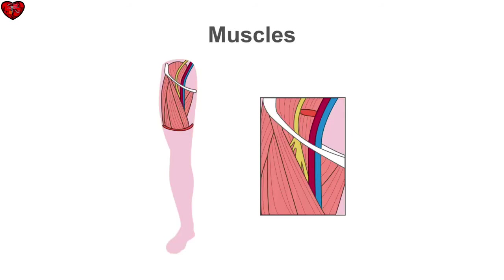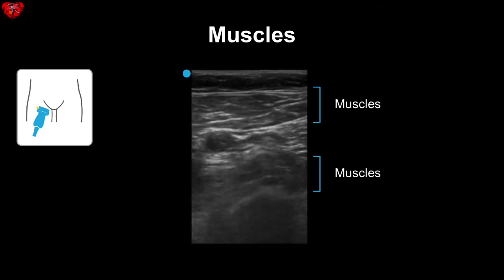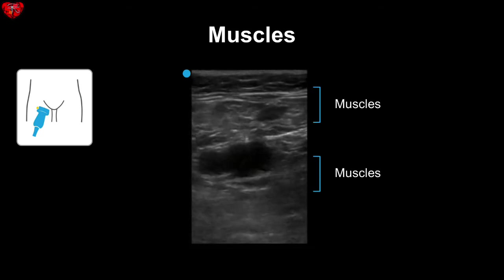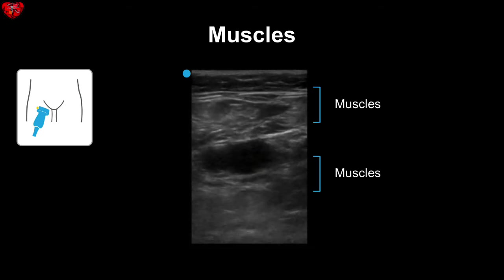You will encounter different structures as you scan through the leg. The thigh has a variety of very strong and thick muscles. Here you can see we are oriented in the transverse plane, with the indicator pointing towards the patient's right. Here you can see thigh muscles — they are some of the strongest in your body, appearing striated and thick.